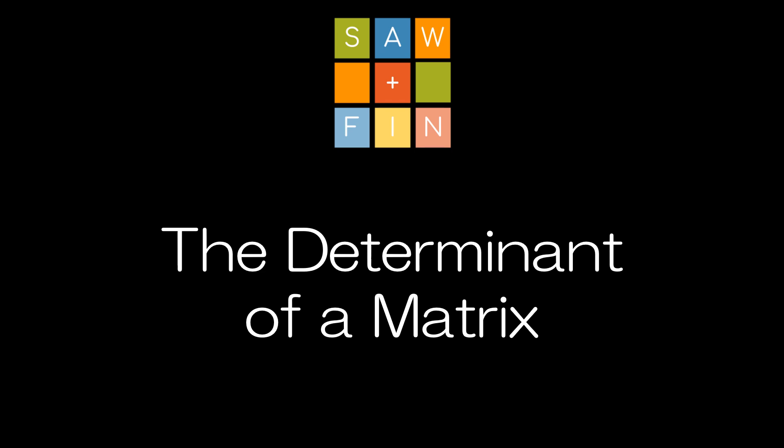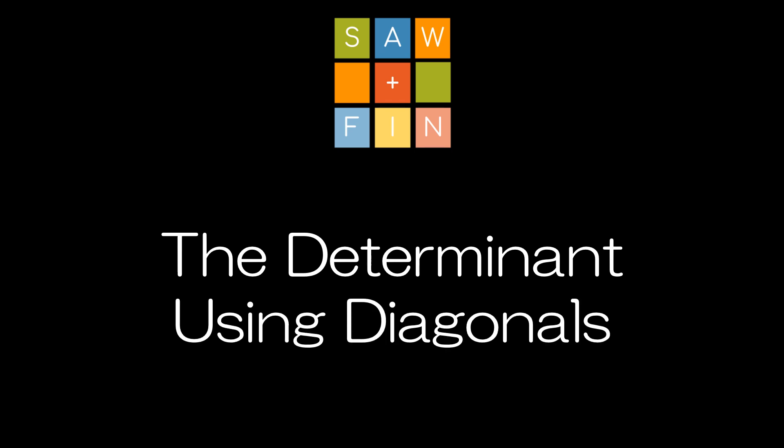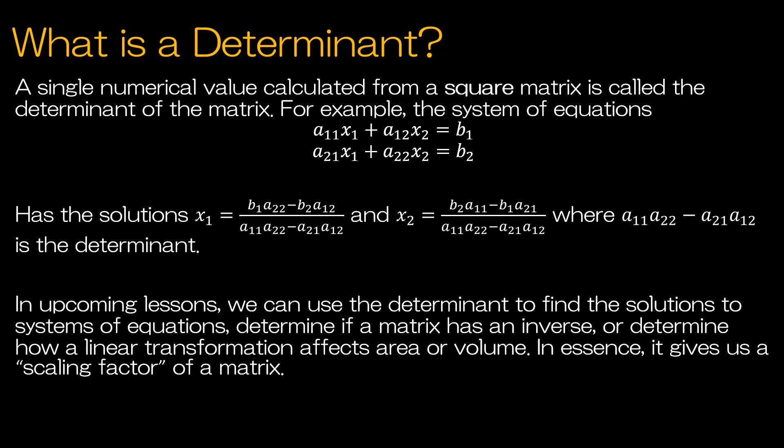The determinant of a matrix — the determinant using diagonals. Before we jump into the calculation, let's talk a little bit about what a determinant is. It's a single numerical value calculated from a square matrix, so it must be a square matrix.